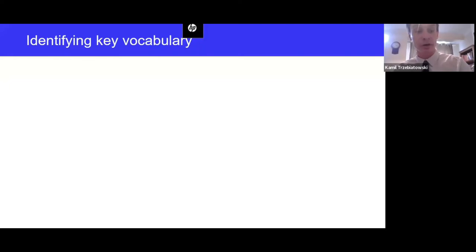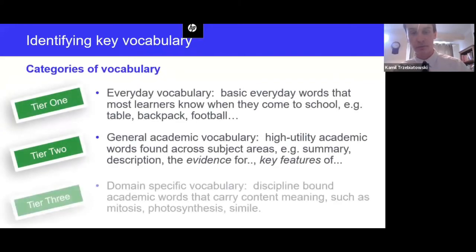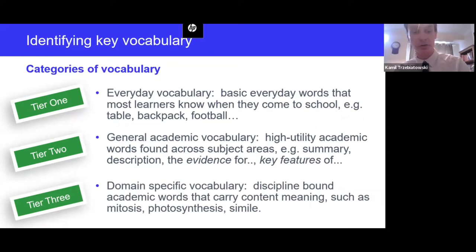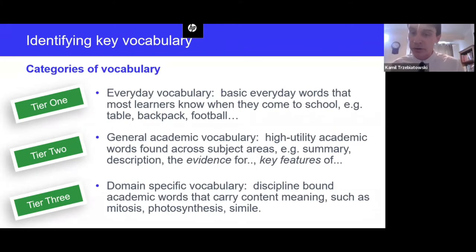One way to think about this is to consider categories of vocabulary — what Beck et al. called tiers of vocabulary from their work. Having a way to think about the kinds of words and phrases in our lessons helps us become more aware of the language demands in our curriculum. Tier one is everyday vocabulary — basic everyday words that most learners know when they come to school: table, backpack, football. Tier two is general academic vocabulary — words used across different academic domains: summary, description, evidence, key features, analyze.